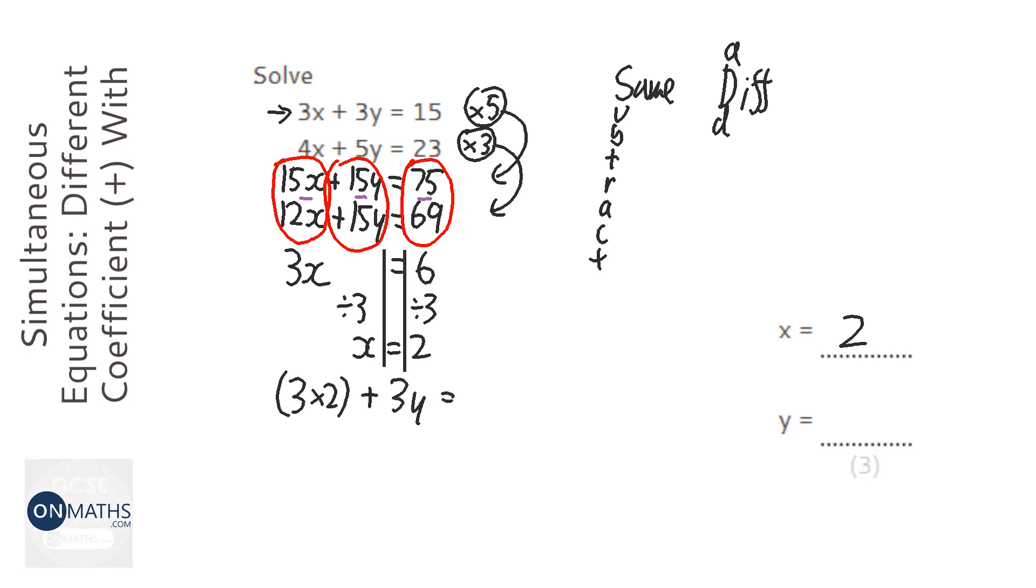So I'm just going to write that equation out, but with our value of x, and then let's solve it. So that's 6 plus 3y equals 15. Take away 6 both sides. 3y equals 11. No, it doesn't. It equals 9.